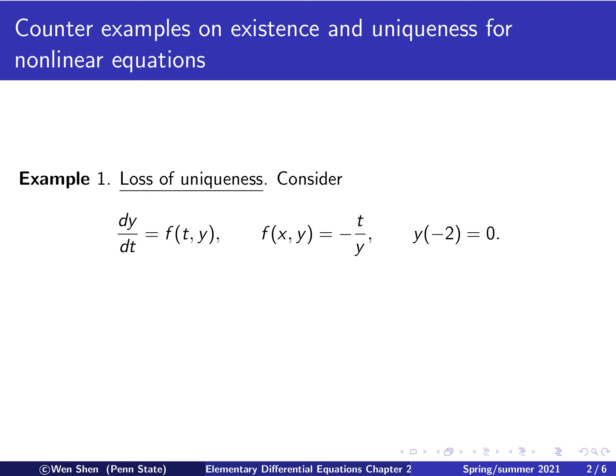We consider the following equation: dy/dt equals some function f of t, y. The function is given as negative t over y, and we have initial condition y at negative 2 equals 0.